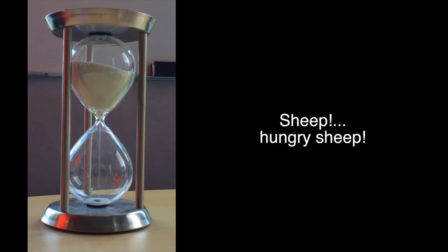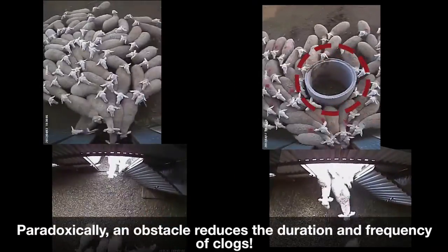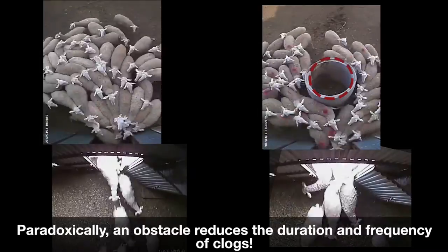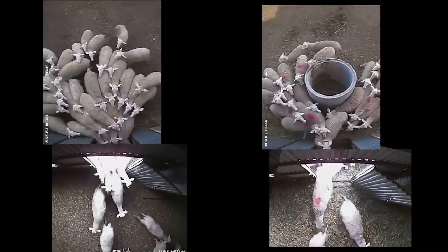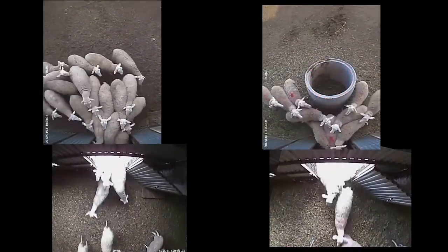For example, with sheep. Ships or sheep? Both, I guess. We know from experiments with particles and simulations that if we put an obstacle in front of the exit, the pressure there is reduced and the risk of getting clogged as well.